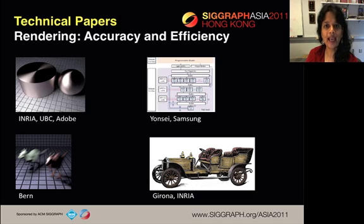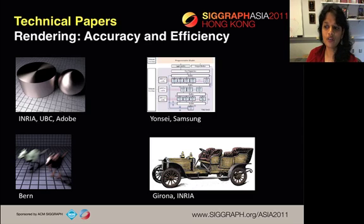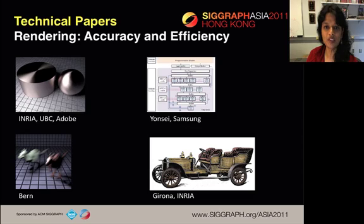In the Rendering Accuracy and Efficiency session, we have a paper that develops a practical displacement interpolation using Lagrangian mass transport to advect one function to another. A new ray tracing hardware architecture. Better Monte Carlo sampling and reconstruction using greedy error minimization. And a GPU parallel hashing scheme for more spatially coherent hashing.